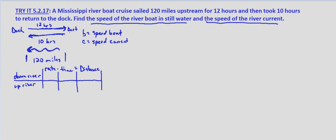Down river, our rate is going to be the speed of the boat plus the speed of the current, so B plus C. Our time was 10 hours and our distance was 120 miles.